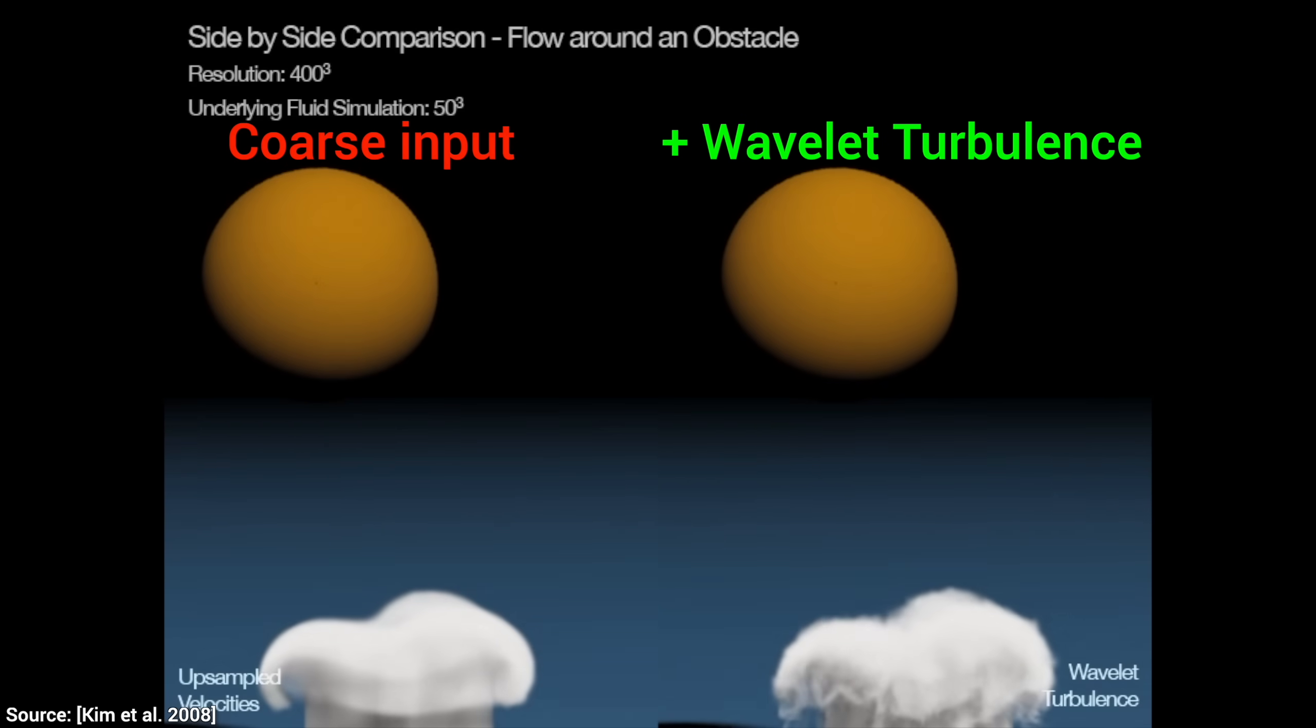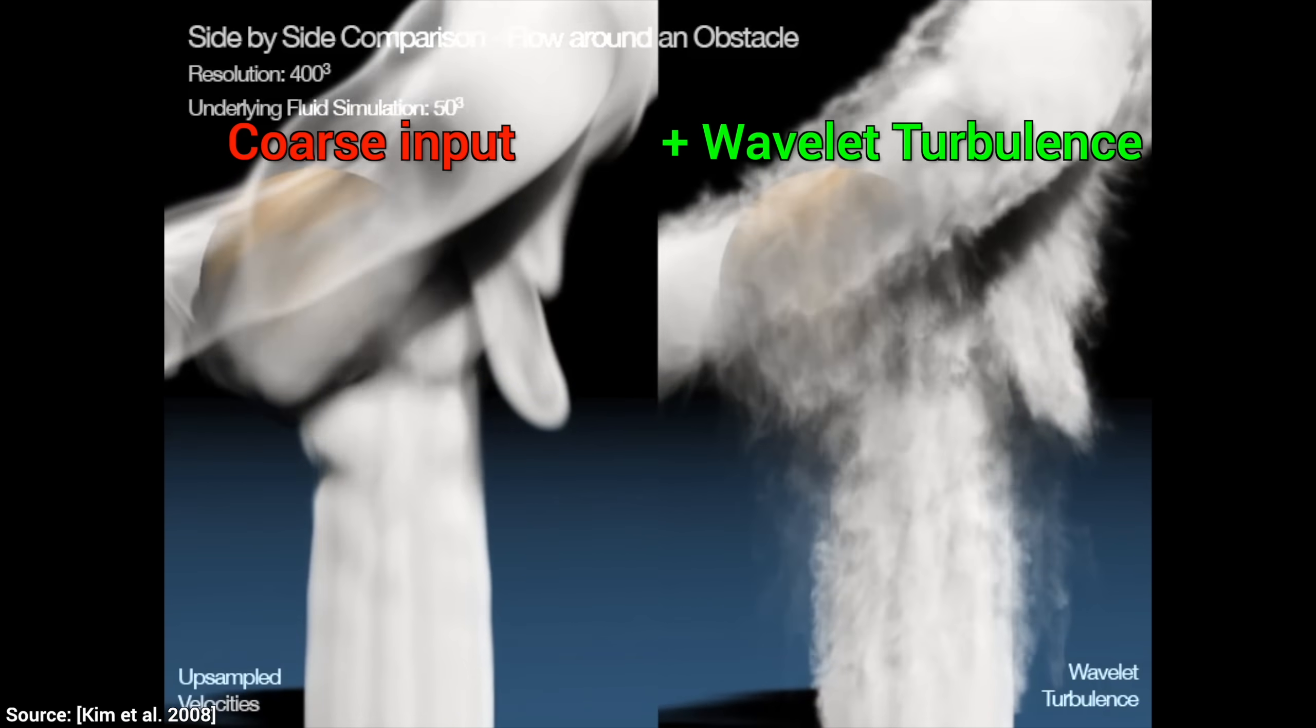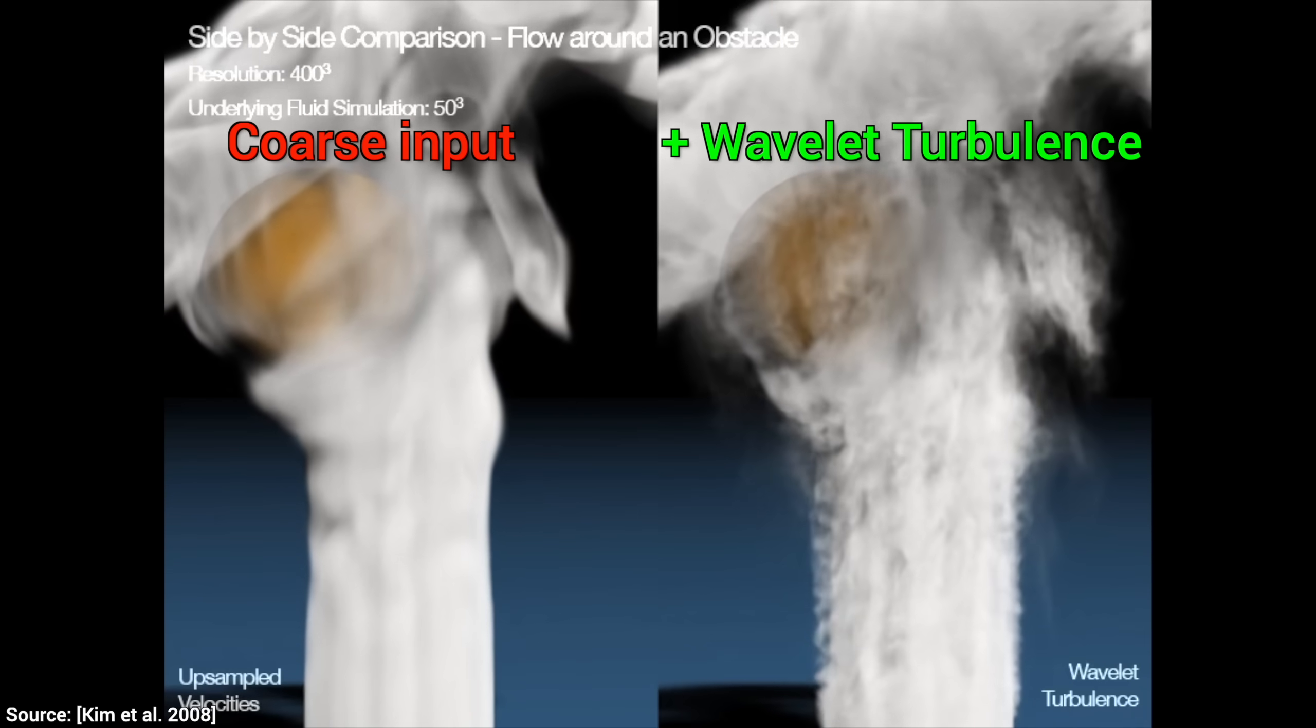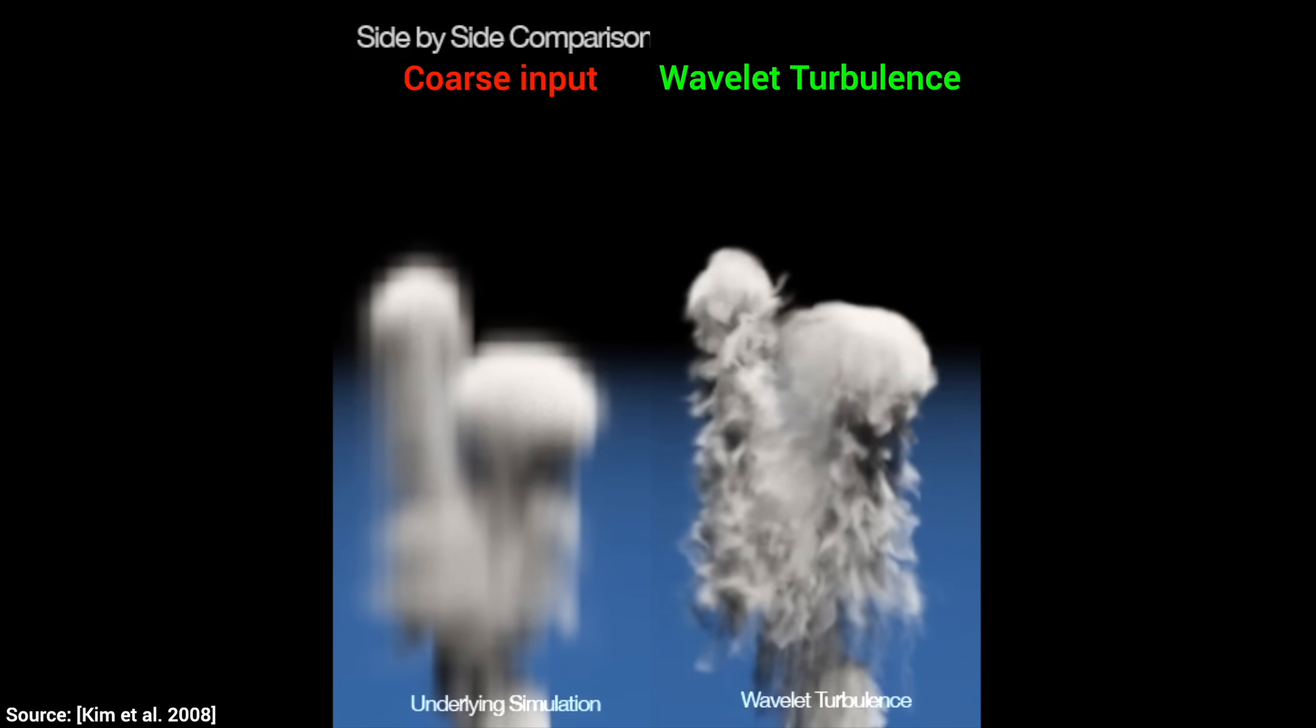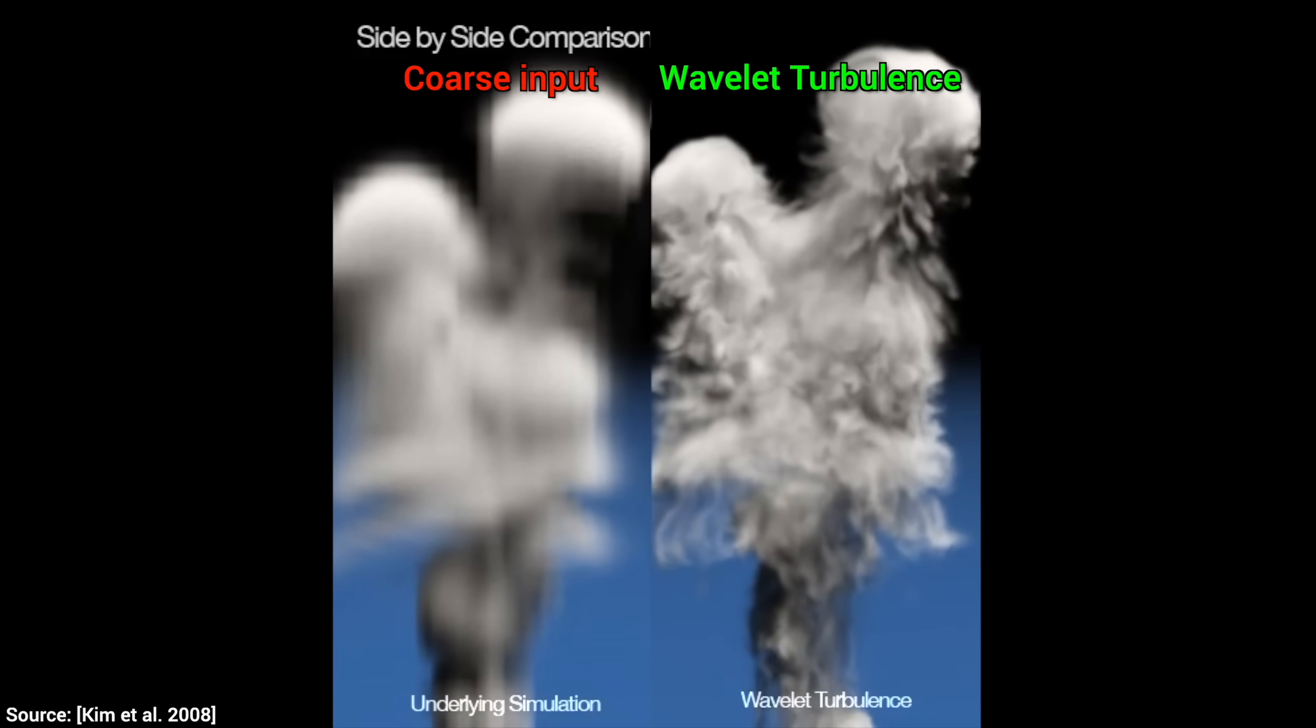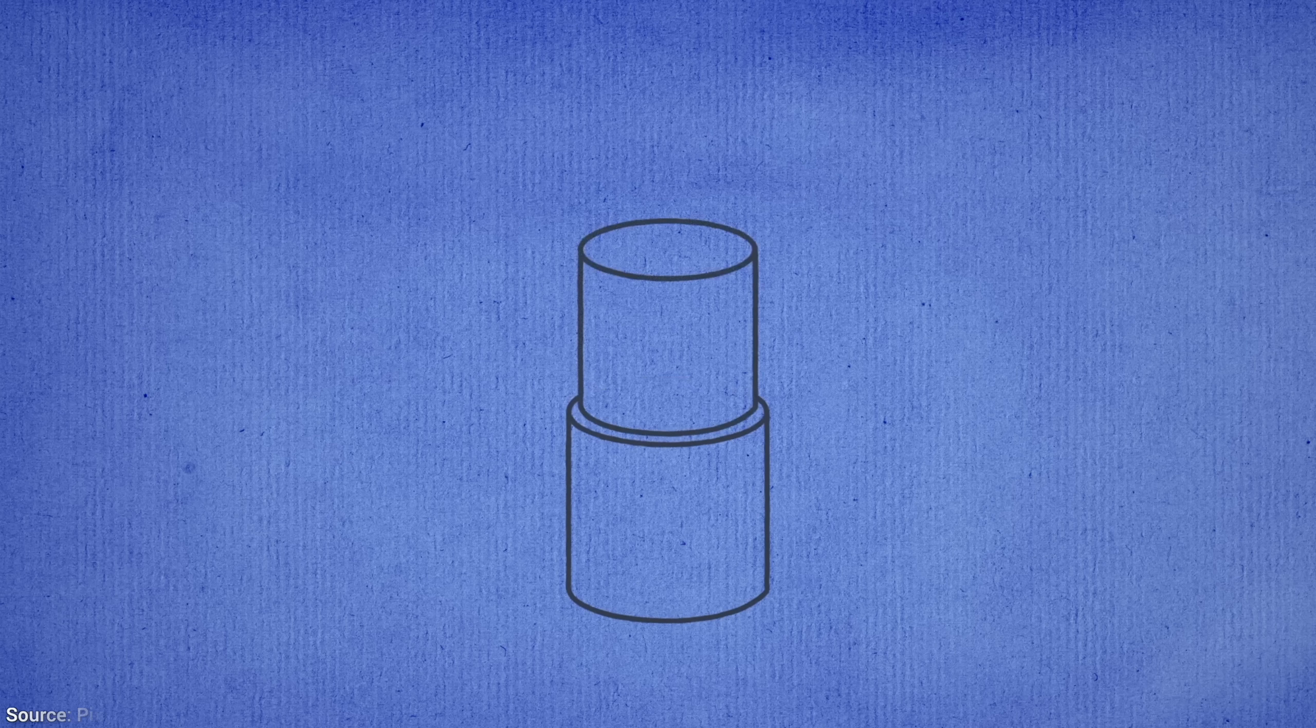So Wavelet turbulence was a way of taking a coarse simulation quickly, and then recreating it with this breathtaking quality. One of the best papers ever written, I think. Yes, I keep saying that. It also won a technical Oscar award, but it had many limitations.